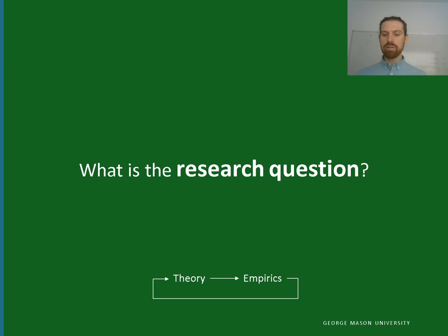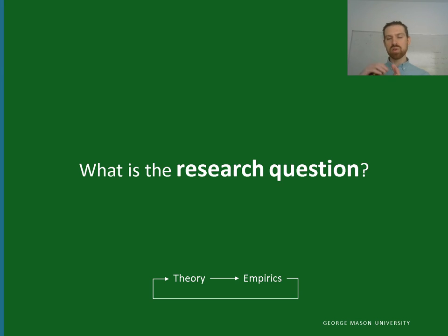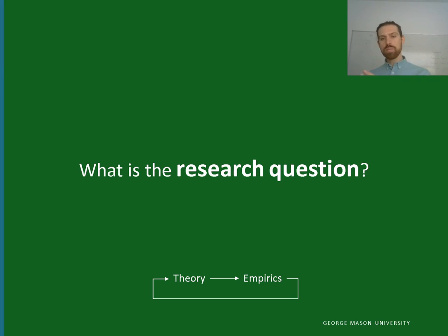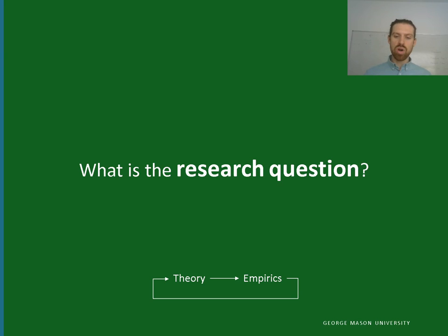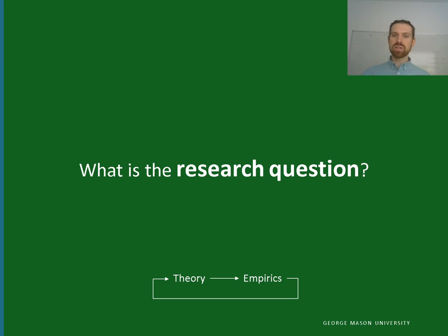So the first question in any research is: what's the research question? If you want to find out something interesting about the world, you probably start from existing theory, then use that theory to inform a set of data analysis techniques to empirically derive findings. You analyze data and find something interesting. Then you draw conclusions, close the feedback loop, derive theoretical understanding, and put that back into the literature. It's an iterative process: theory leads to new empirical research, and empirical research leads to new theory.